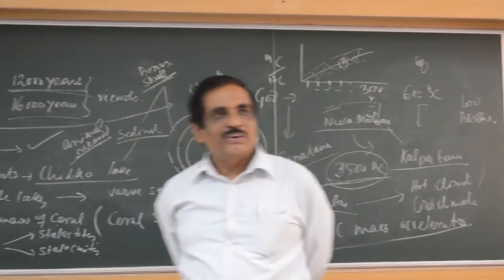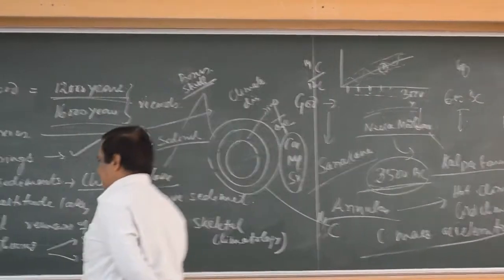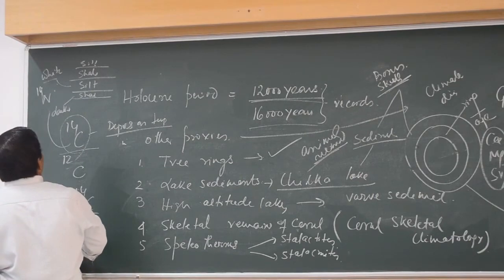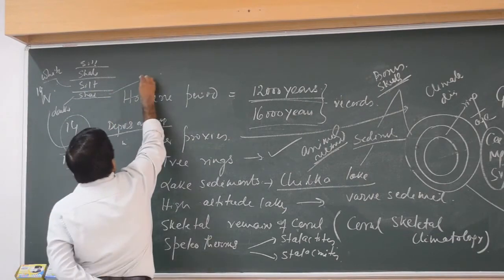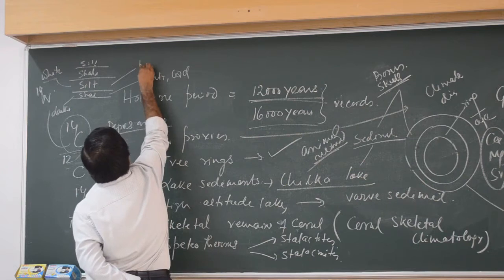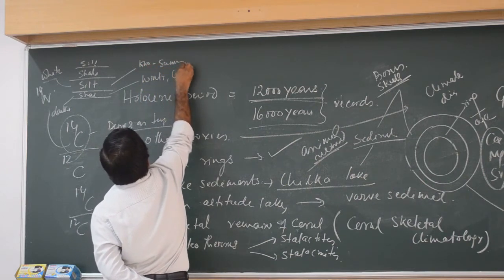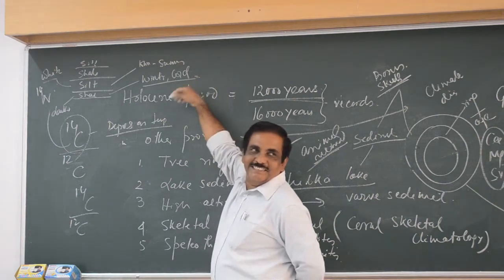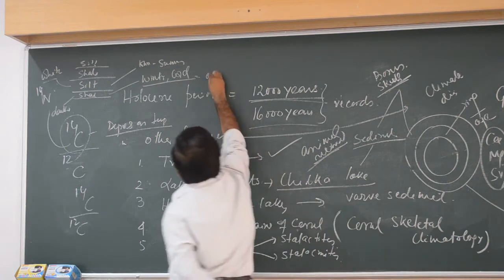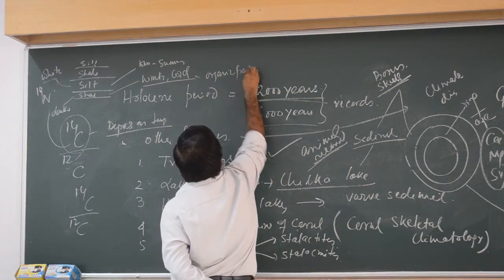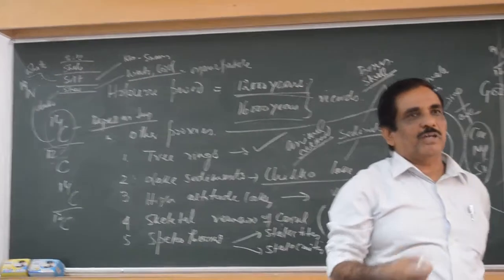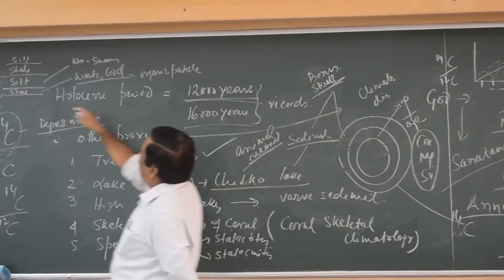The dark cell layer indicates winter and cold conditions. It is dark because when it becomes very cold and freezes, the animals and organic materials living there die and get deposited, making the layer dark with organic particles.